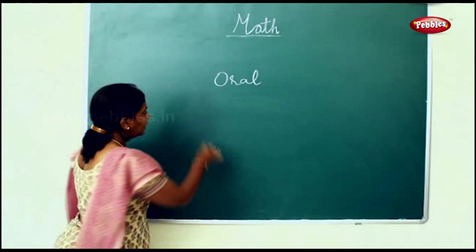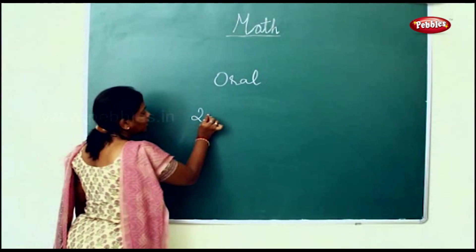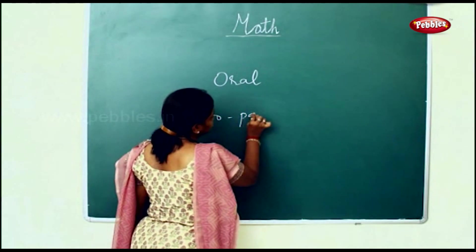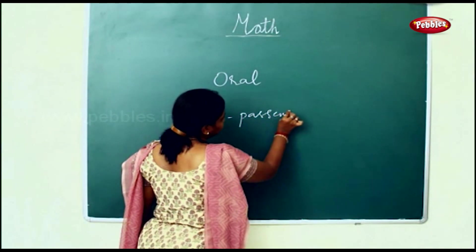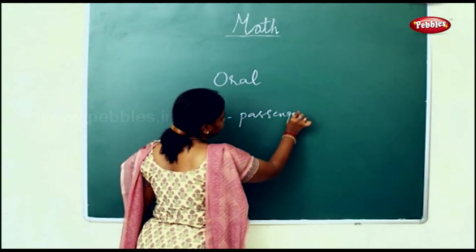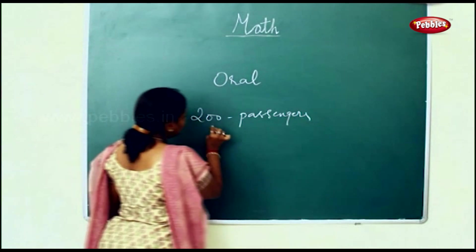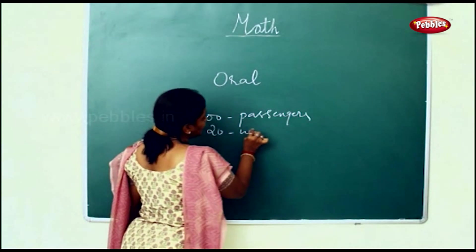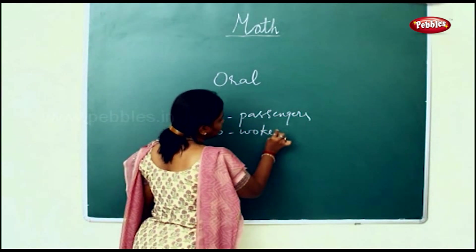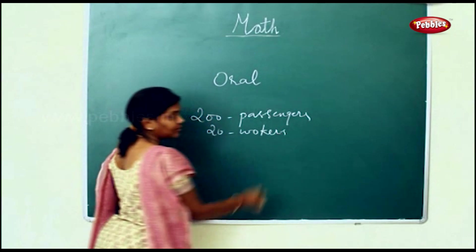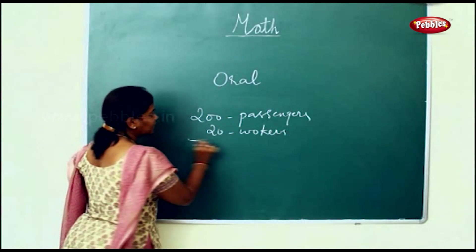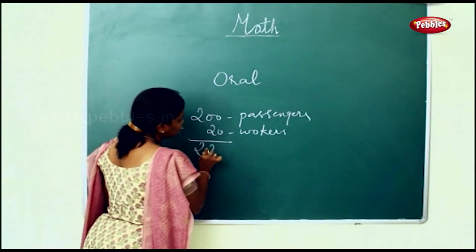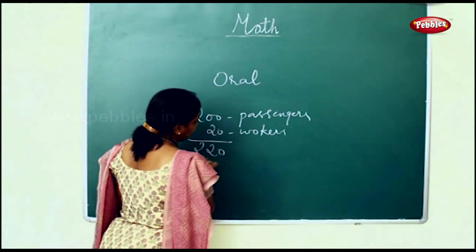In an aeroplane, there are 200 passengers and 20 workers. So how many are there in the aeroplane together? 200 plus 20 will be 220.